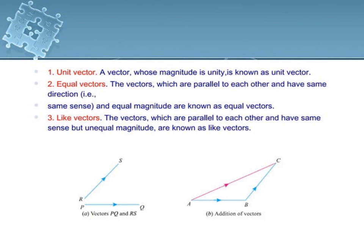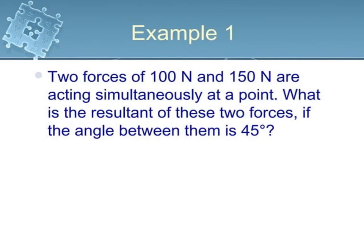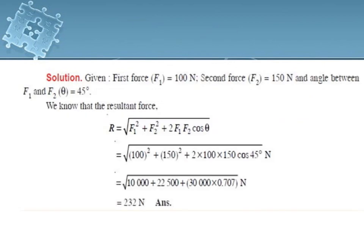Here is a problem. Two forces of 100N and 150N are acting simultaneously at a point — this is a concurrent force. What is the resultant of these two forces if the angle between them is 45 degrees? Given: F1 = 100N, F2 = 150N, theta = 45°. Resultant R = √(F1² + F2² + 2·F1·F2·cos θ) = √(100² + 150² + 2×100×150×cos45°). The final answer is 232N.